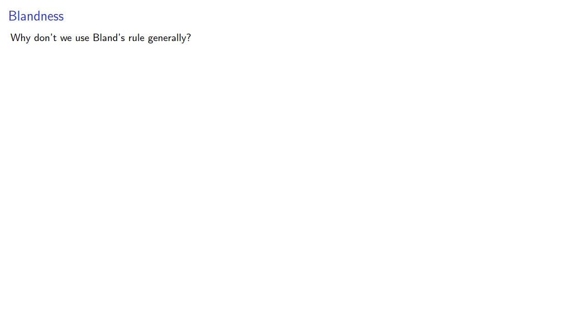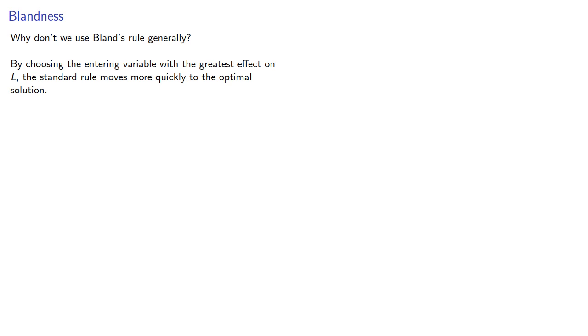So why don't we use Bland's rule generally? By choosing the entering variable with the greatest effect on L, the standard rule moves more quickly to the optimal solution. In very large systems, the difference makes the simplex algorithm faster, unless it cycles. And since cycling is relatively rare, we typically use the faster method.